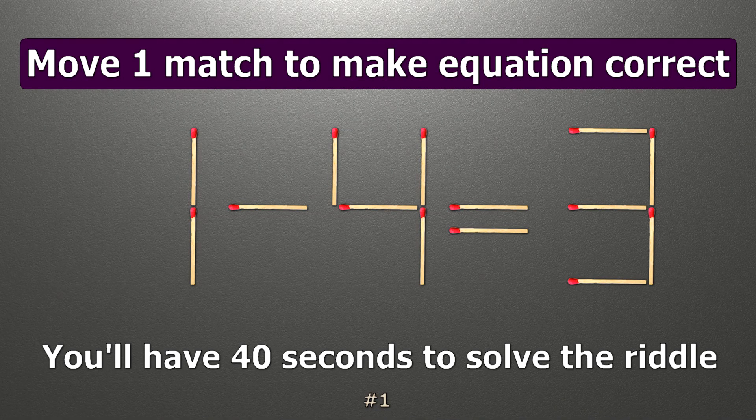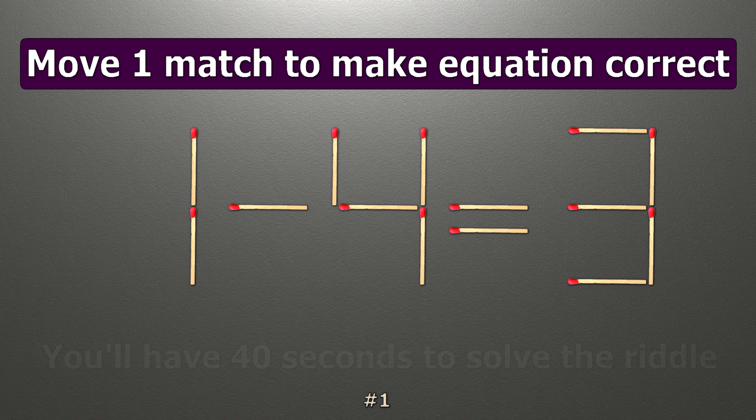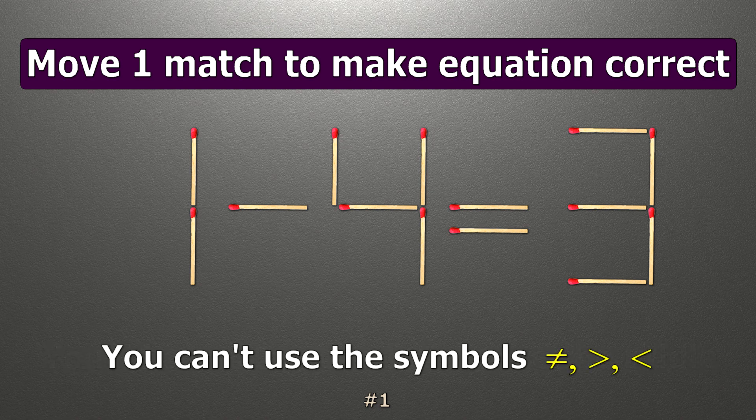We have the equality 1 minus 4 equals 3. Our equality is wrong. We need to move one match to make our equality correct.